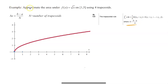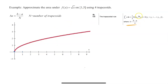Example 1: Approximate the area under the curve f(x) = √x on [1, 5] using 4 trapezoids. We're going to approximate the area from 1 to 5. They want 4 trapezoids. To figure out the width of each trapezoid, we use h = (b − a)/n.